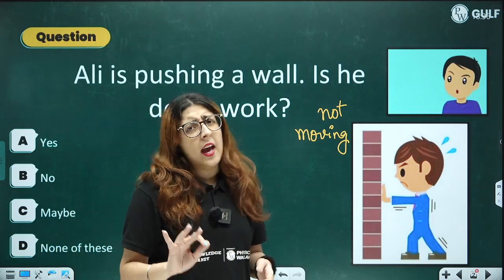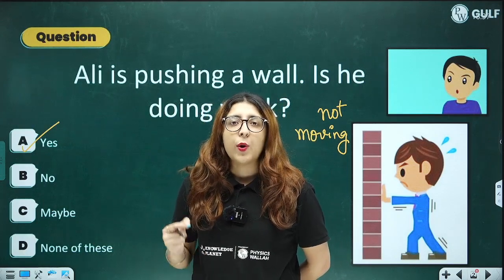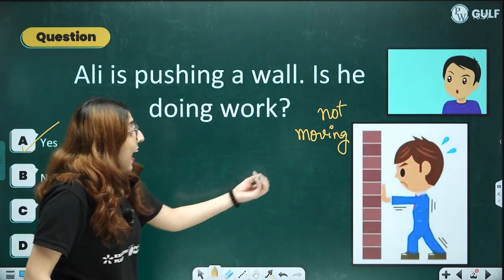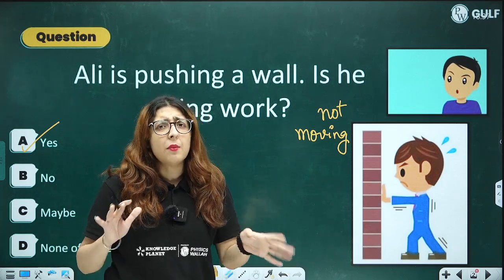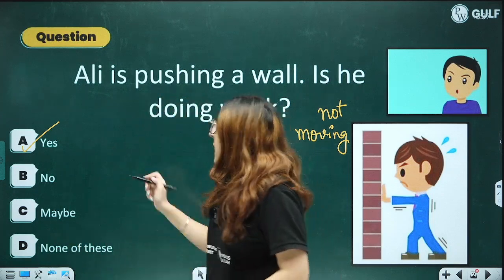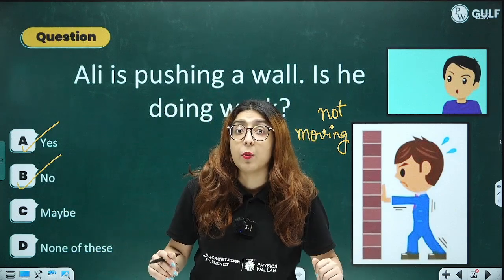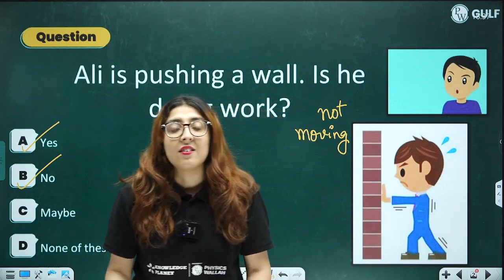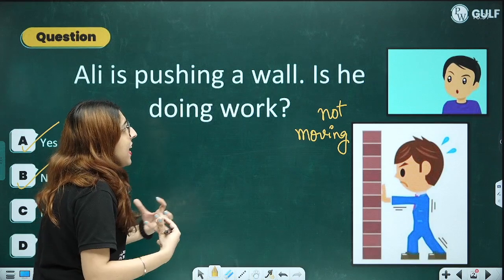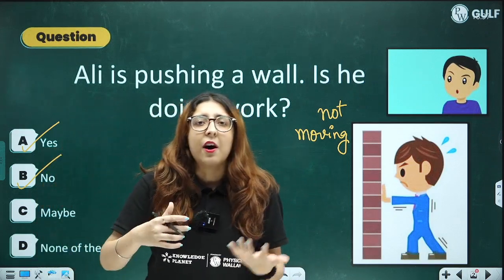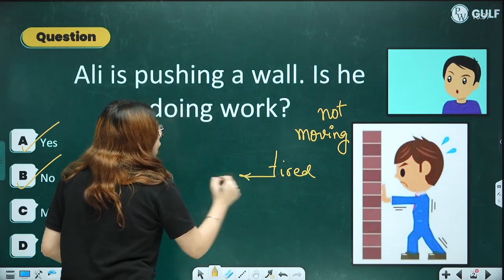In the scenario, the wall is not moving but Ali is getting tired. If I say okay, Ali is doing work — in the human sense, I will say certainly he is doing work. But some students will put logic here: as the wall is not moving, saying Ali is doing work is a bit contradictory.